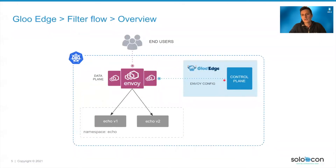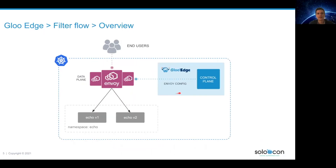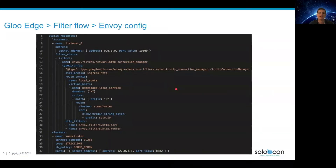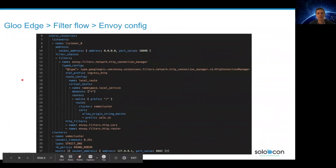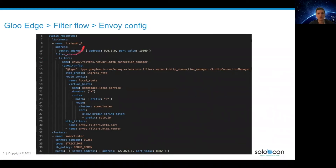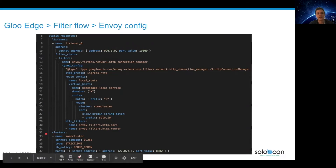Gloo Edge is the control plane that will push some configuration to Envoy, and when client requests come to Envoy they will go through different filters before reaching any upstream service. If we have a look at this simple Envoy configuration file, you can see two different blocks. The first one is listeners, which defines the server sockets. The second block is named clusters and that will define upstream servers.